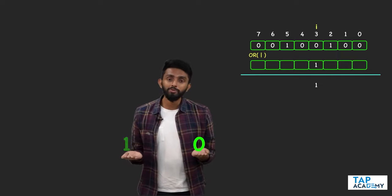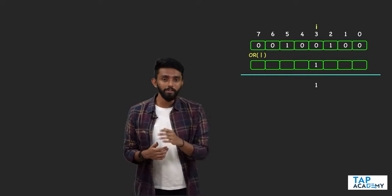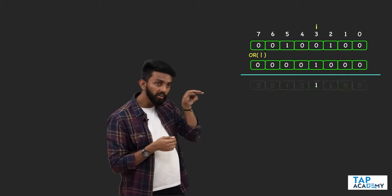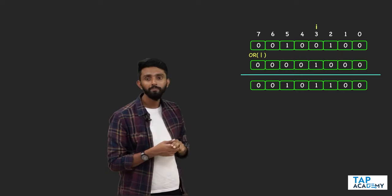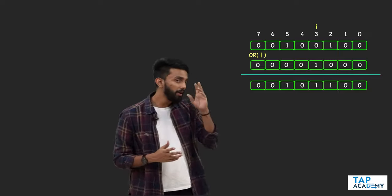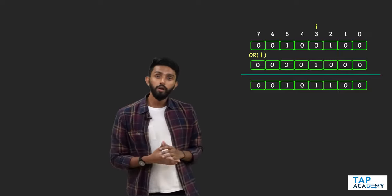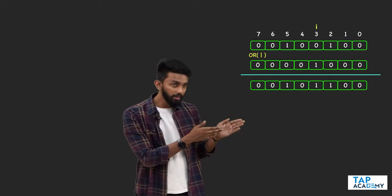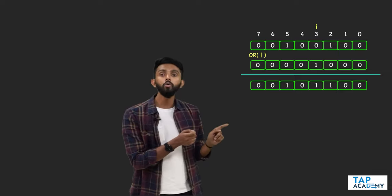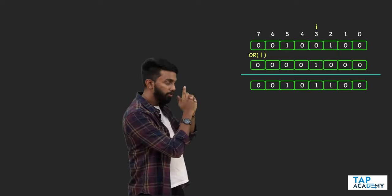To the left of the one I place all zeros, and to the right I place all zeros. If I apply OR operation, all other bits will remain the same — and the ith bit has now turned on. The ith bit has turned on.